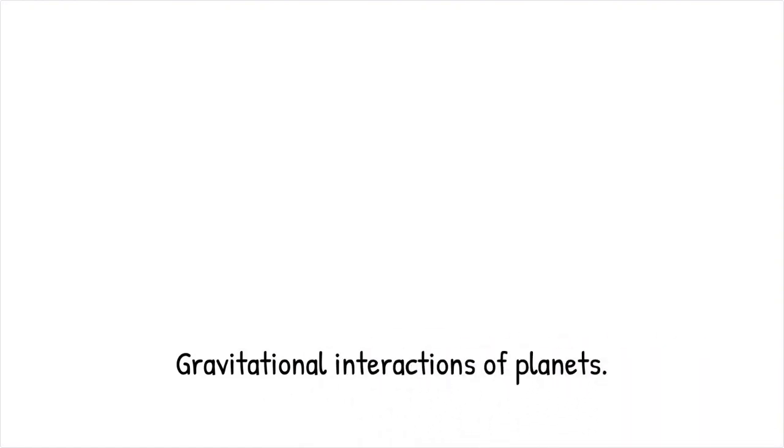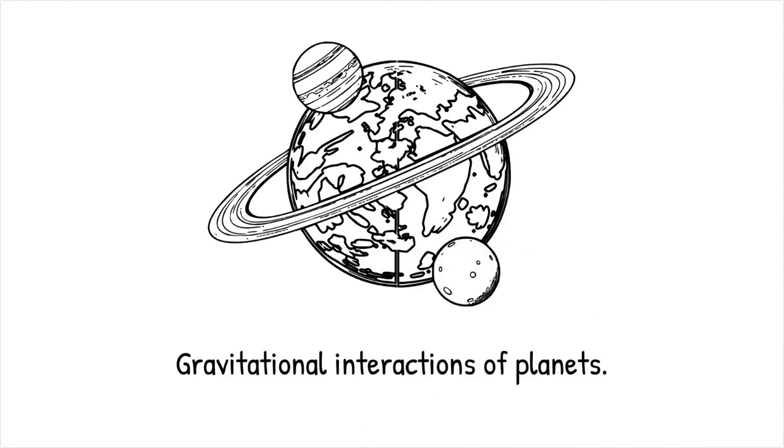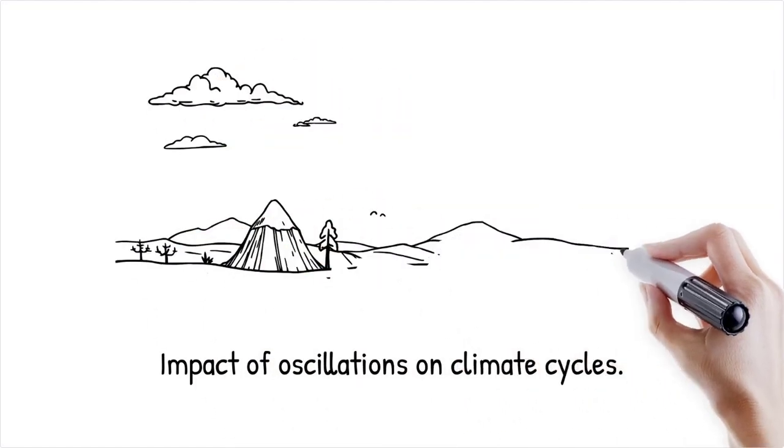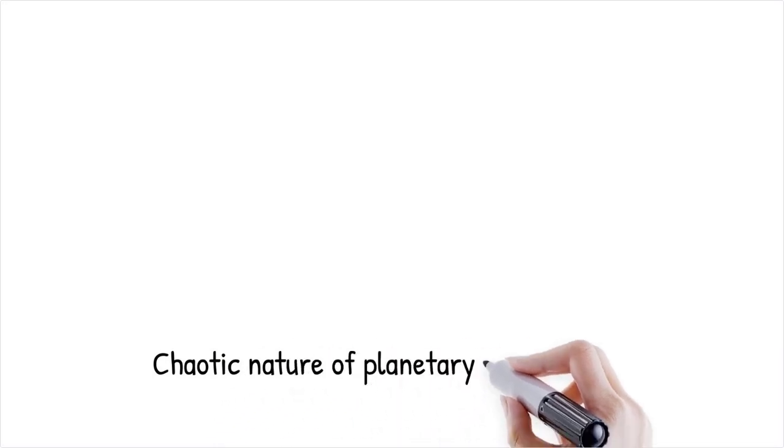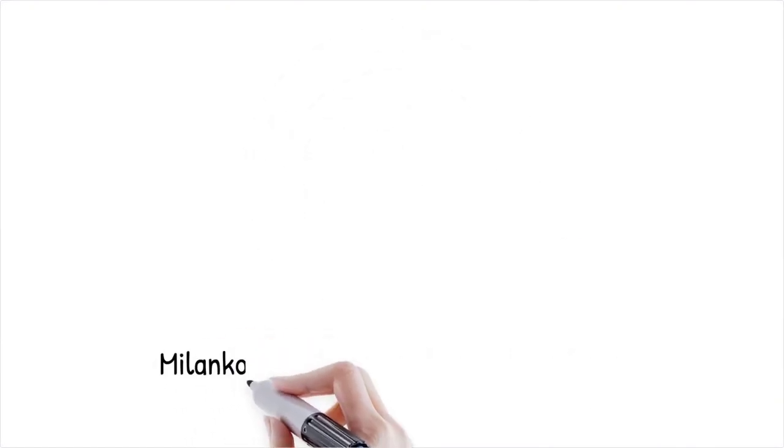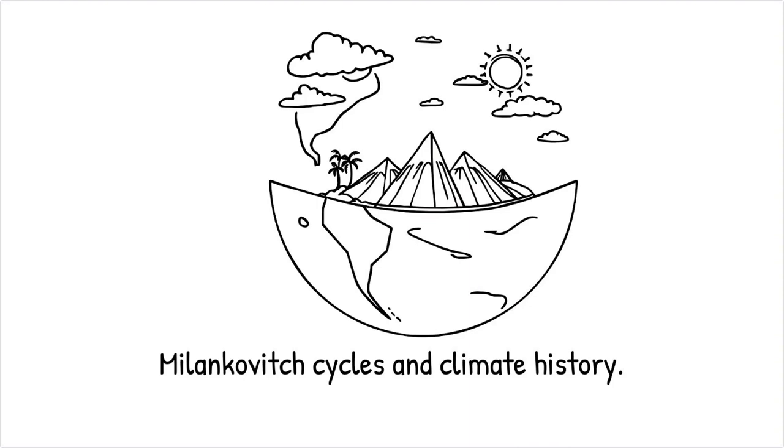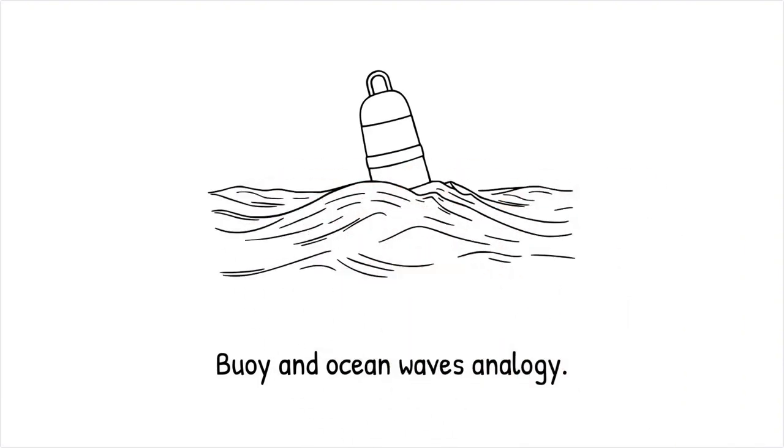The gravitational forces exerted by other planets, especially Jupiter and Venus, cause small perturbations in Earth's orbit, leading to periodic oscillations in eccentricity and axial tilt over 100,000 to 400,000 years. These oscillations contribute to climate cycles such as ice ages, but they do not significantly threaten Earth's overall orbital stability. The chaotic nature of planetary interactions means that predicting exact long-term motion beyond a billion years becomes increasingly difficult. The Milankovitch cycles, driven by changes in Earth's orbit and tilt, have influenced Earth's climate history and contributed to past ice ages. This is similar to how ocean waves slightly shift the path of a floating buoy. While small adjustments occur, the buoy does not suddenly drift far from its usual location unless a major force is applied.